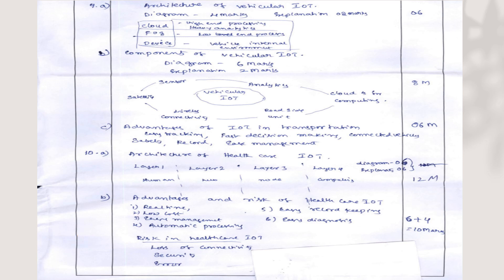The final 10A and 10B questions: 10A is architecture of healthcare IoT — you will draw a full diagram of the architecture where the diagram carries 6 marks and the explanation for that framework carries another 6 marks, totally 12 marks. 10B is advantages and risks of healthcare IoT — advantages listed and explained in detail carry 6 marks, and risks listed and explained carry 4 marks, so 6 plus 4, totally 10 marks.